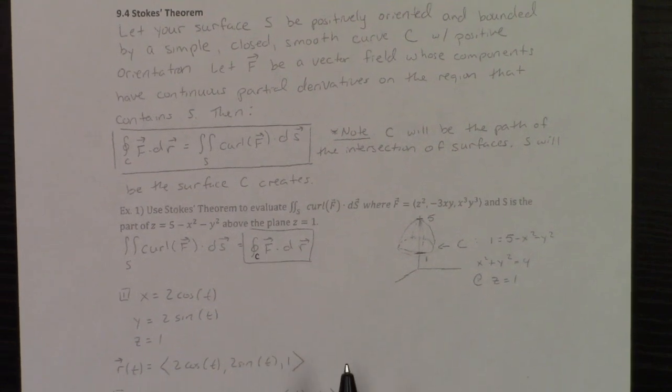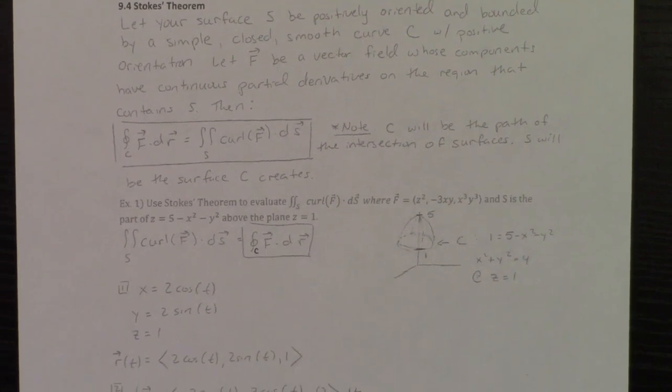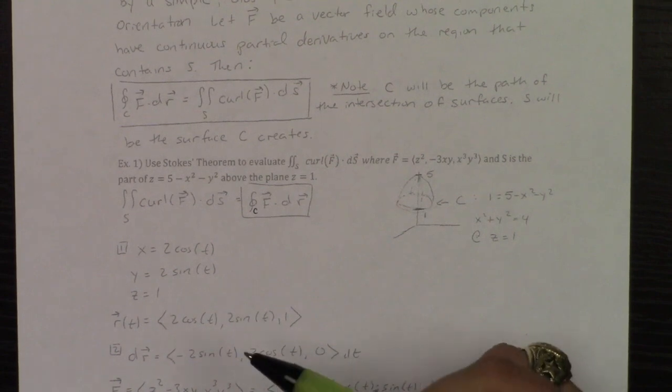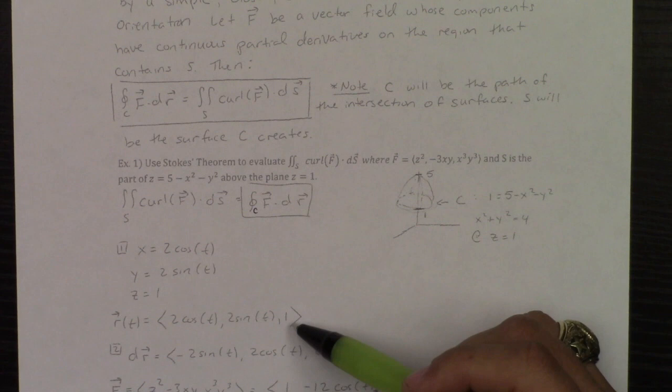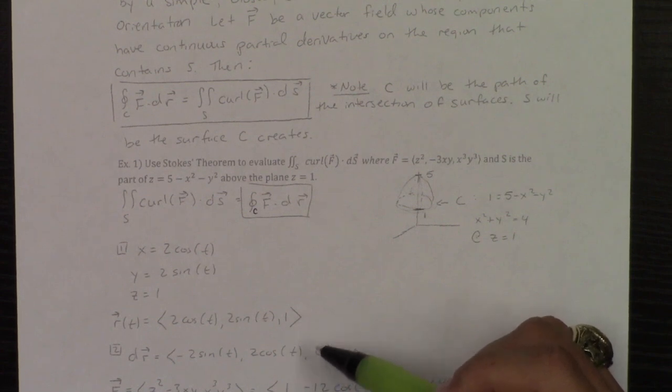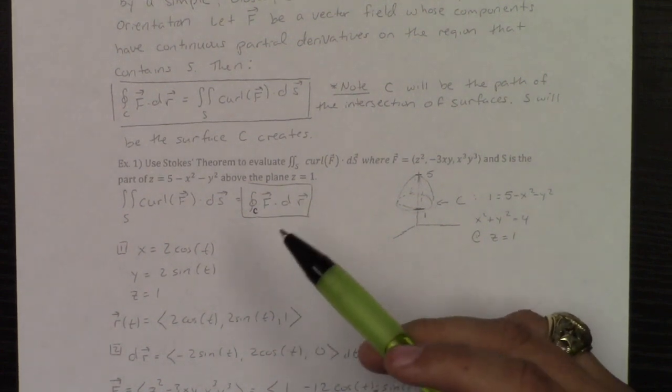And then, since I want to do an F dotted with dr, your second step, dr, is simply just a derivative of R. dr is going to be that negative 2 sine T, 2 cosine T, and then 0.